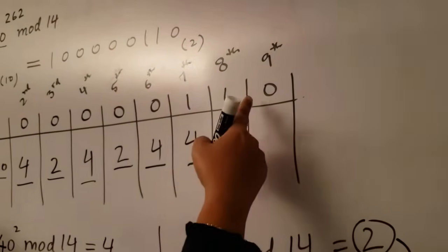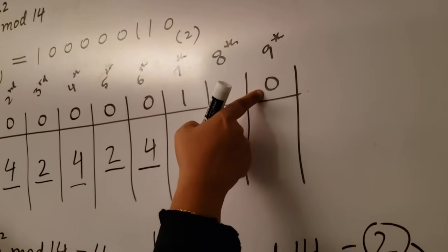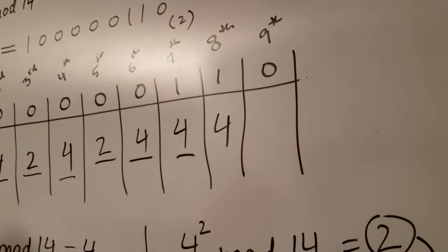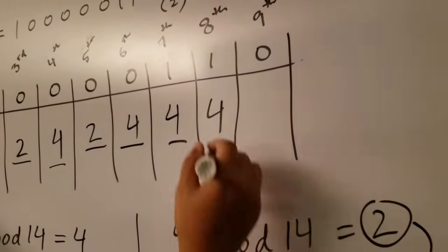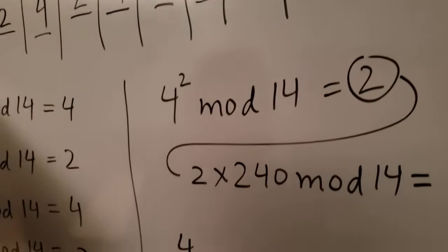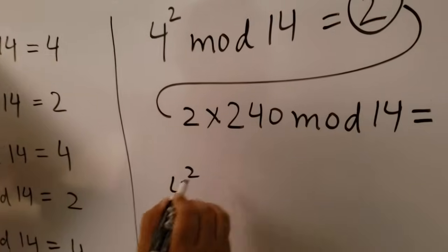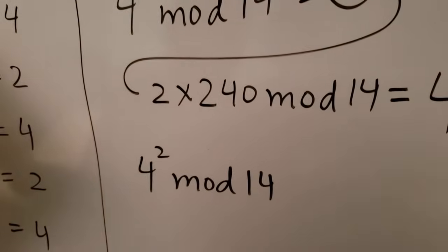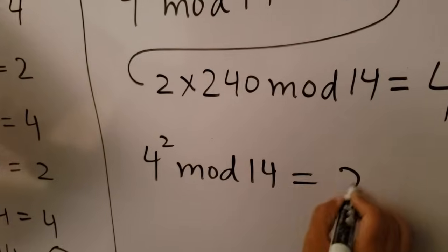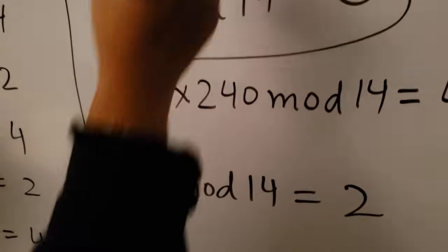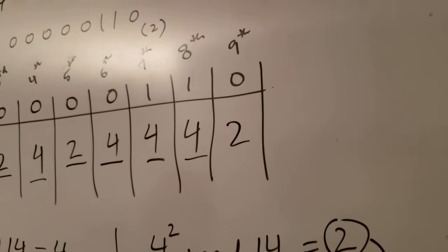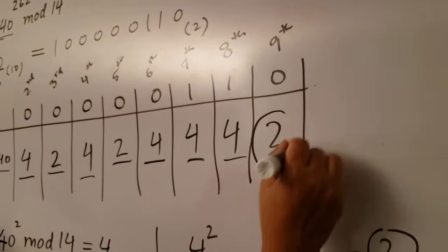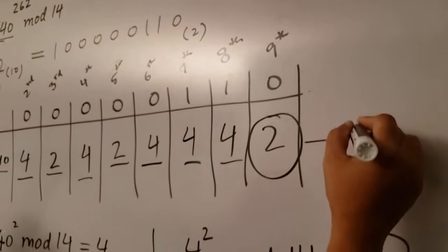Now look at the binary digit of the ninth column, which is zero, so we do one step. Take the value four, square it, mod 14 — you get two. Write down two in the ninth column. Whatever value you get in the ninth column is your final answer, which is two.